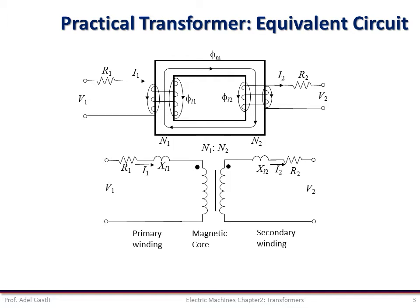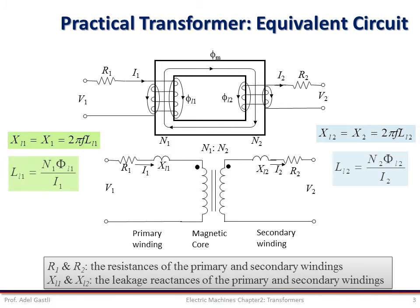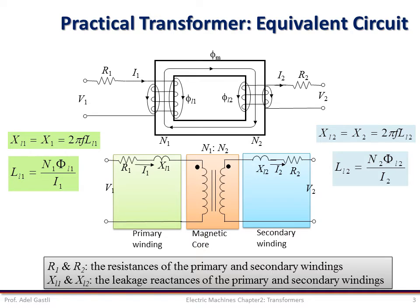Therefore, we can represent the transformer circuit model as shown in this figure, where R1 and R2 are the resistances of the primary and secondary windings, XL1 and XL2 are the leakage reactances of the primary and secondary windings, and LL1 and LL2 are the leakage inductances of the primary and secondary windings. So we have the primary winding represented by the model inside the green box, the secondary winding represented by the circuit model inside the blue box, and the magnetic core represented by the circuit inside the orange box.